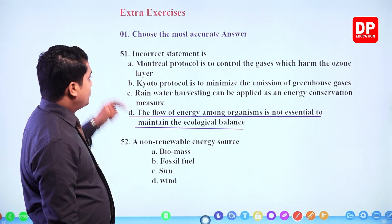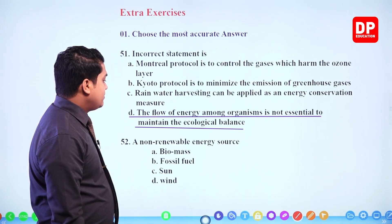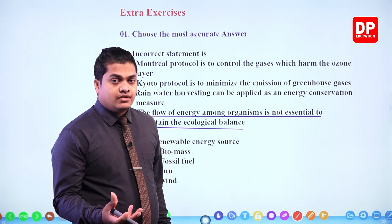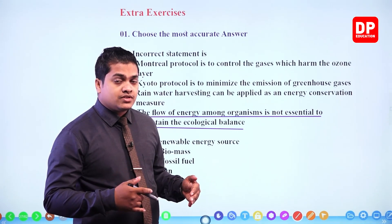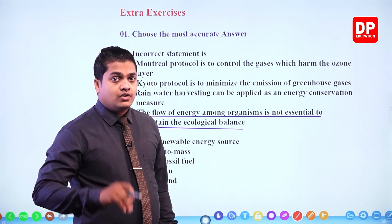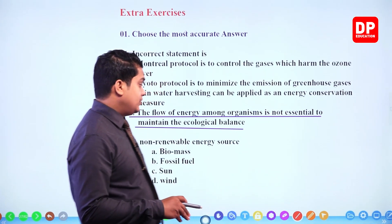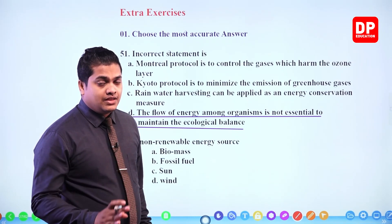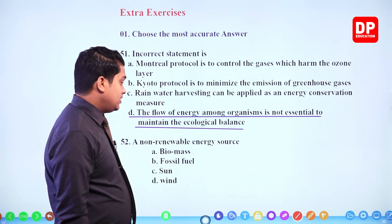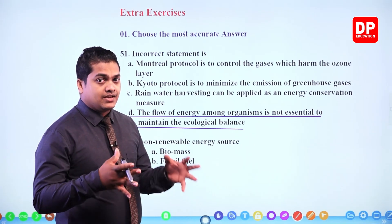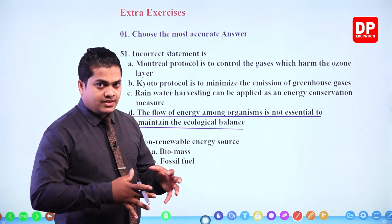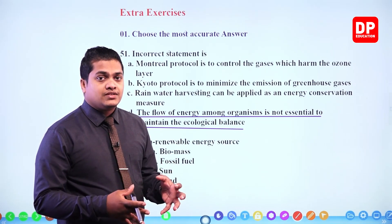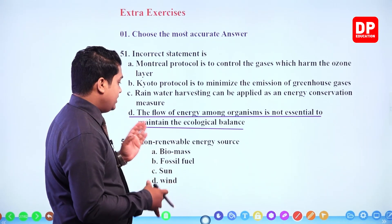Next: non-renewable energy source — biomass, fossil fuel, or others. A non-renewable energy source is exhausted within a short time period. Biomass is renewable — plant and animal materials will last as long as the Earth lasts. Fossil fuel is the answer — after around 100 to 150 years at this rate, fossil fuel will definitely be exhausted.